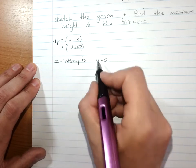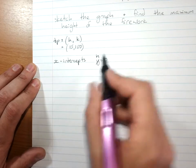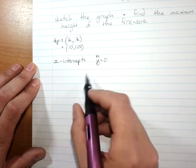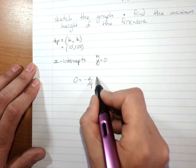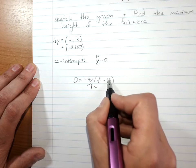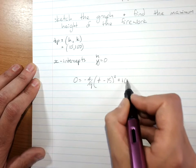So now obviously this is h is 0 and I'm finding the t-intercepts. So 0 equals negative 4 over 9, t minus 15 squared plus 100.